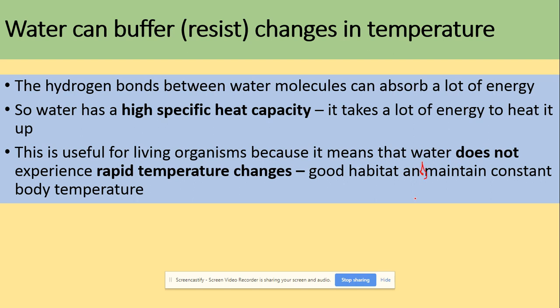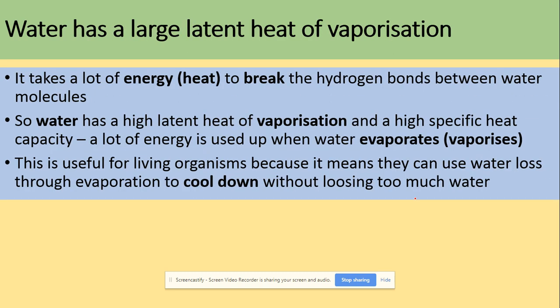Water also has a large latent heat of vaporization — it takes a lot of energy to break the hydrogen bonds between water molecules. Water therefore has a high specific heat capacity and a large latent heat of vaporization. A lot of energy is used up when water evaporates, which is useful for living organisms because they can use water loss through evaporation to cool down without losing too much water.